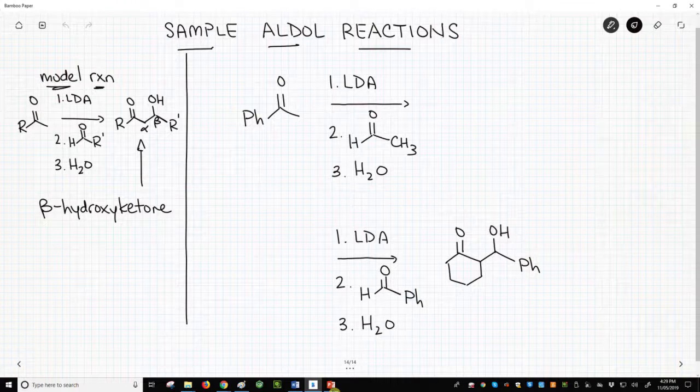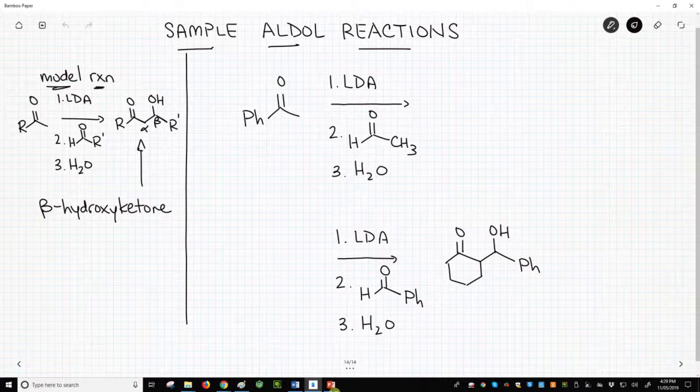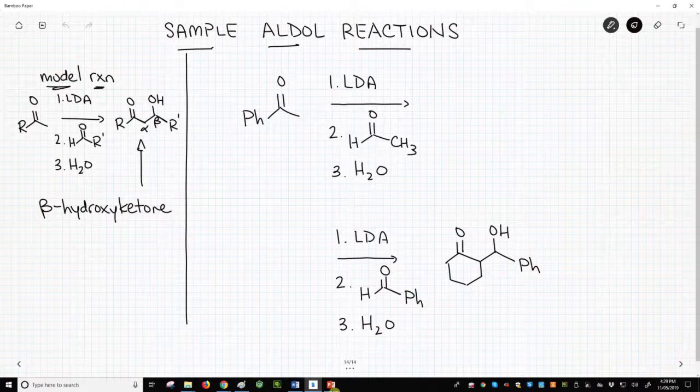All right, let's now look at our sample reactions. On the top of the screen, we have the starting material and reagents for an aldol reaction. We just need to provide the structure of the product, which we know will be a beta-hydroxy ketone.